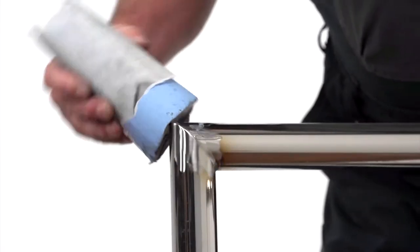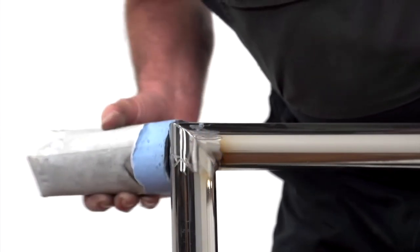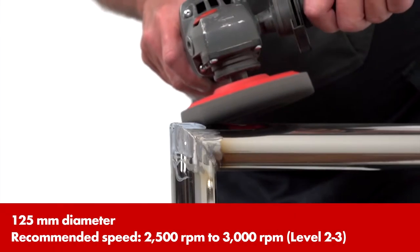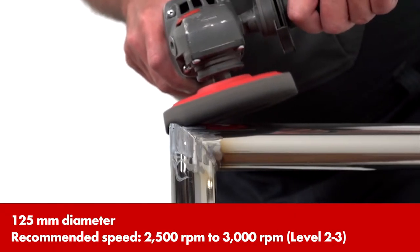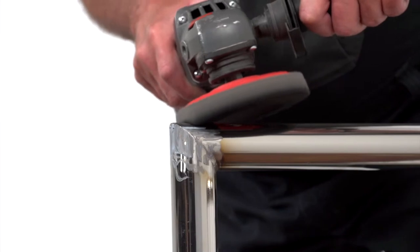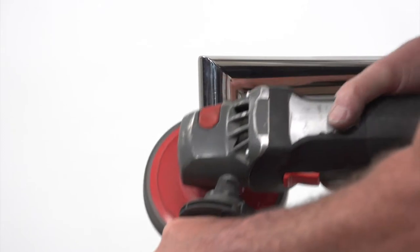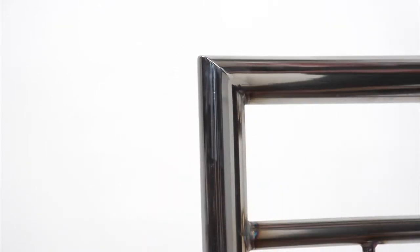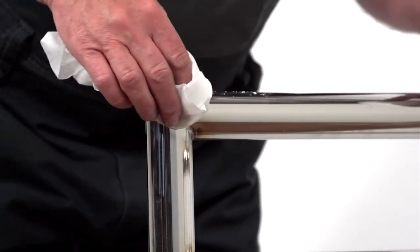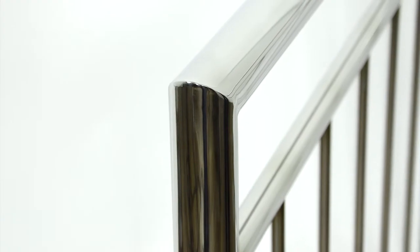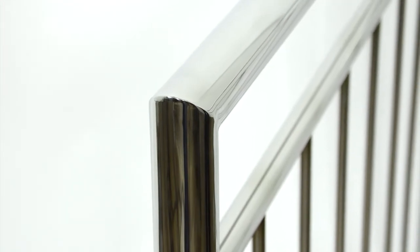Apply the blue polishing paste to the still warm seam. Change to the felt flap disc and work on the corner with this. Remove the remains of the polishing paste using Vienna chalk and the microfiber cloth. If you have followed the steps precisely, you will have a good result with no heat tint colors.